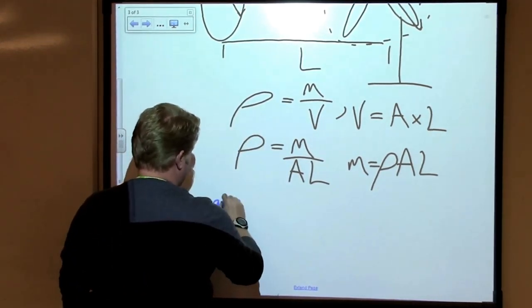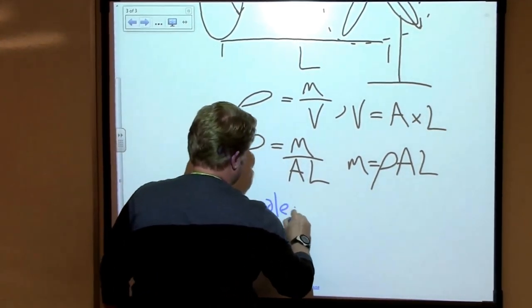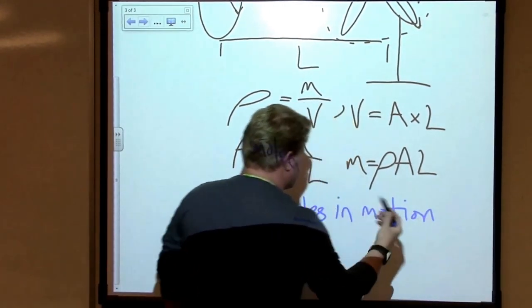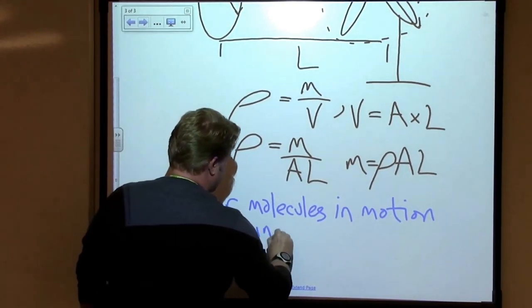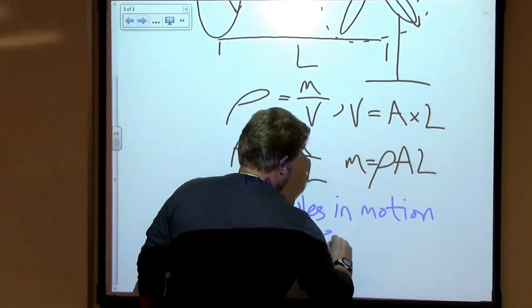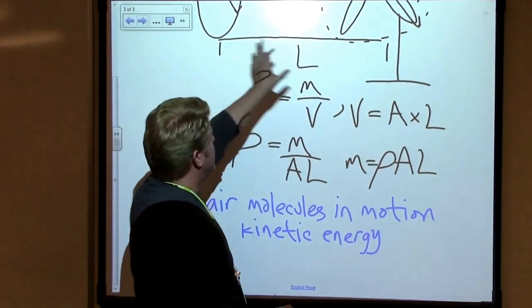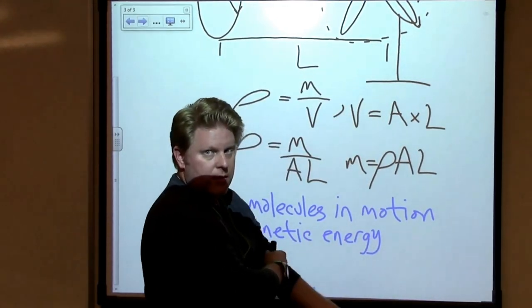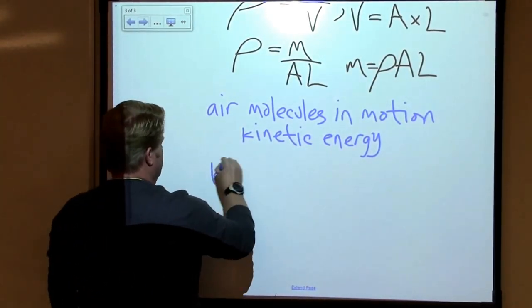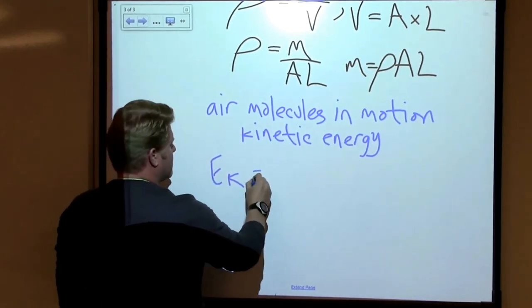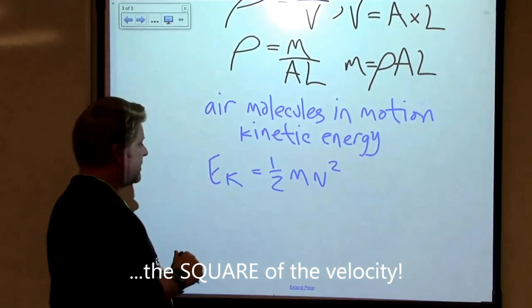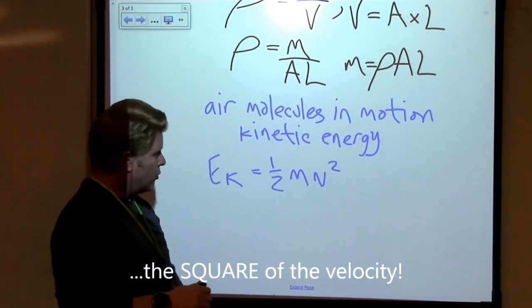So again, what we're talking about are air molecules in motion. So since they're moving, probably best to use an equation for kinetic energy if we want to know how much energy is in this cylinder. So what's the equation for kinetic energy? Well, E sub K, kinetic energy is equal to one half times the mass times the velocity squared of the object that's in motion.